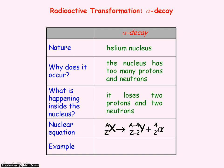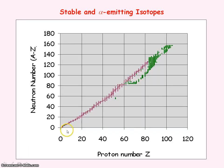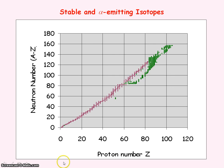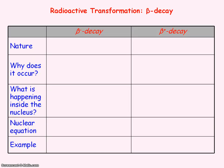An example of a nucleus undergoing alpha decay is uranium-238, which decays to thorium. This graph shows the stable isotopes in purple, plotting neutron number against proton number, with the green isotopes representing those that undergo alpha decay. You can see it is generally heavy nuclei that undergo alpha decay.